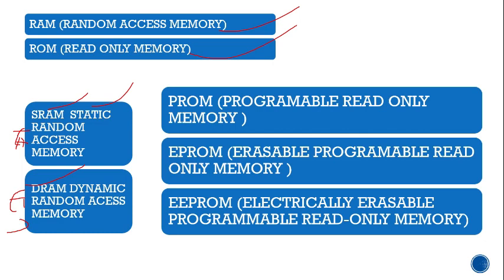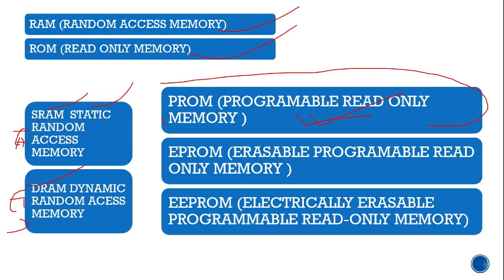PROM (Programmable Read-Only Memory): each bit is locked by a fuse or antifuse, and data is stored permanently. EPROM (Erasable Programmable Read-Only Memory) is non-volatile in nature and can retrieve data when power is turned off — that is the key property of EPROM.